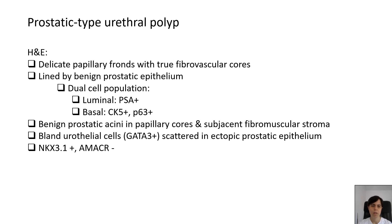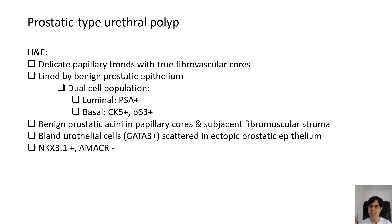Microscopically, prostatic-type urethral polyps show delicate papillary fronds with true fibrovascular cores, lined by benign prostatic epithelium with its typical dual cell population of luminal PSA-positive cells and basal cells showing expression of basal cell markers such as high molecular weight cytokeratins or p63. Benign prostatic acini are usually seen in the papillary cores and in the subjacent fibromuscular stroma. We also usually see scattered benign urothelial cells intermixed with the prostatic epithelium lining the papillary structures. The urothelium is better highlighted using GATA-3. The lesion is positive for NKX3.1, in keeping with its prostatic nature, and is negative for AMACR.